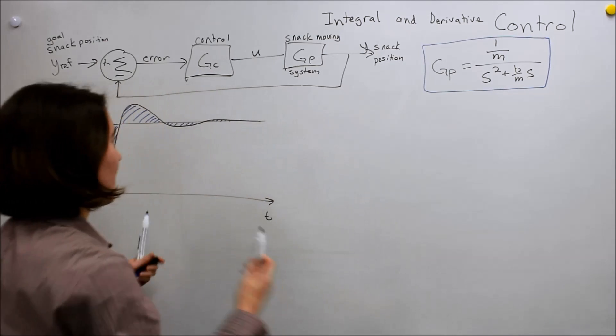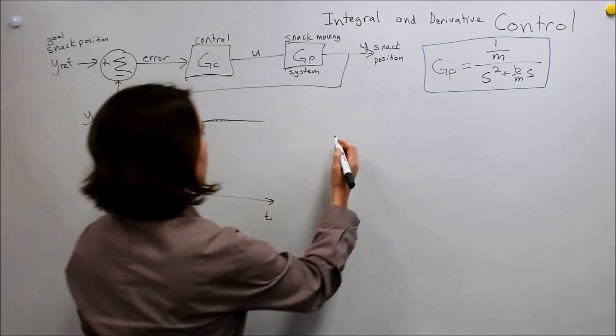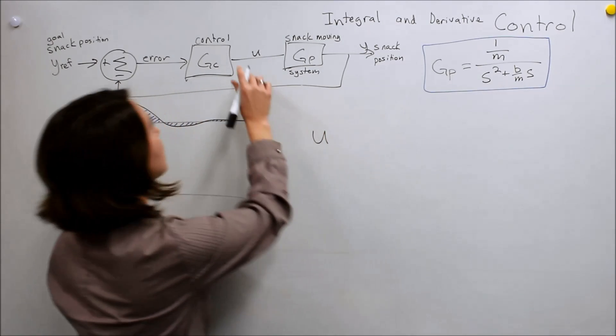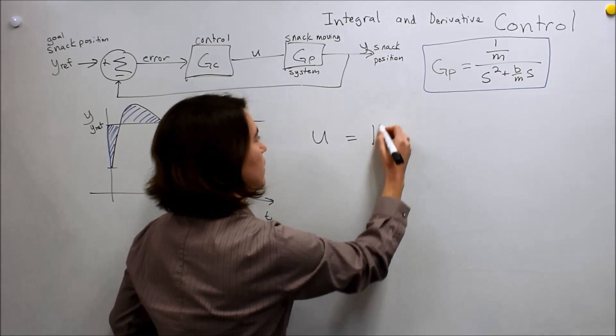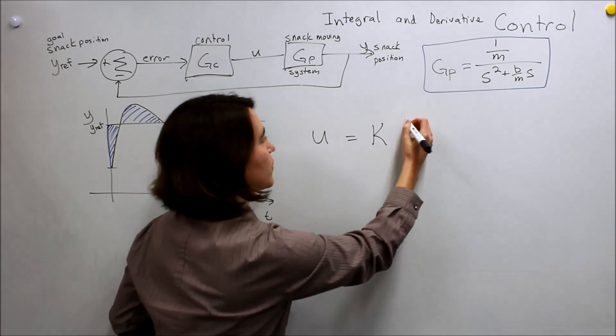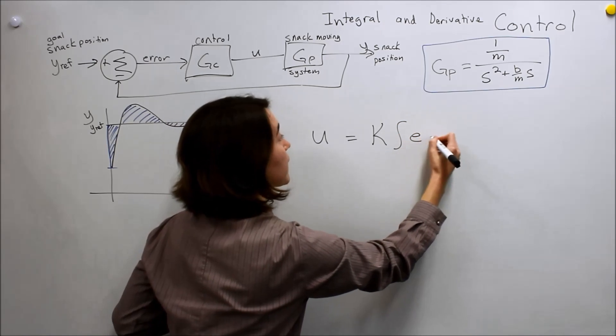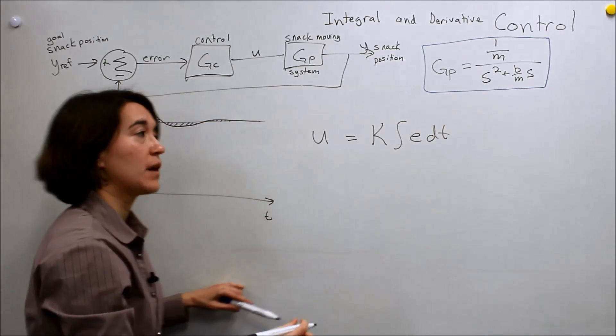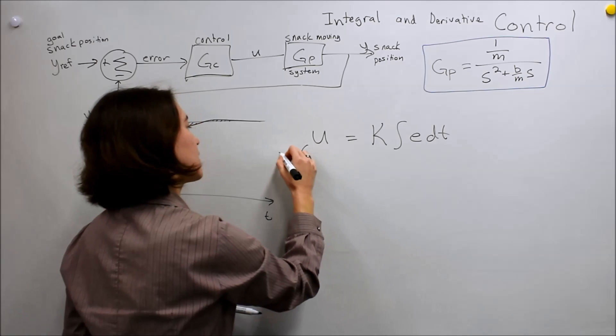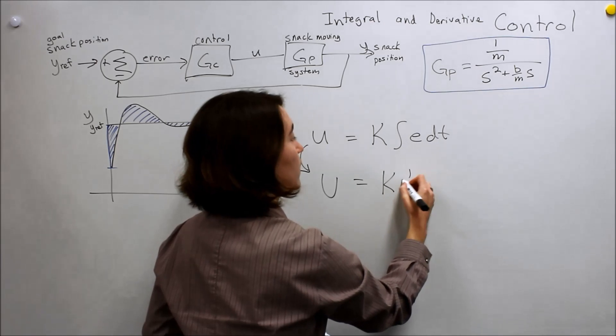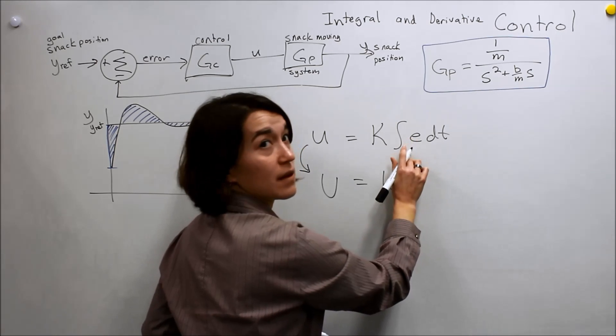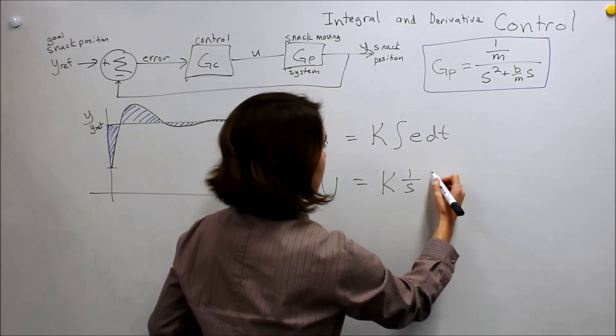So to write that out, the input into this system, instead of being proportional to the error itself, it's proportional to the integral of the error over time. And when we take the Laplace transform of this, we get U equals K1 over S, because it's the integral, and E.